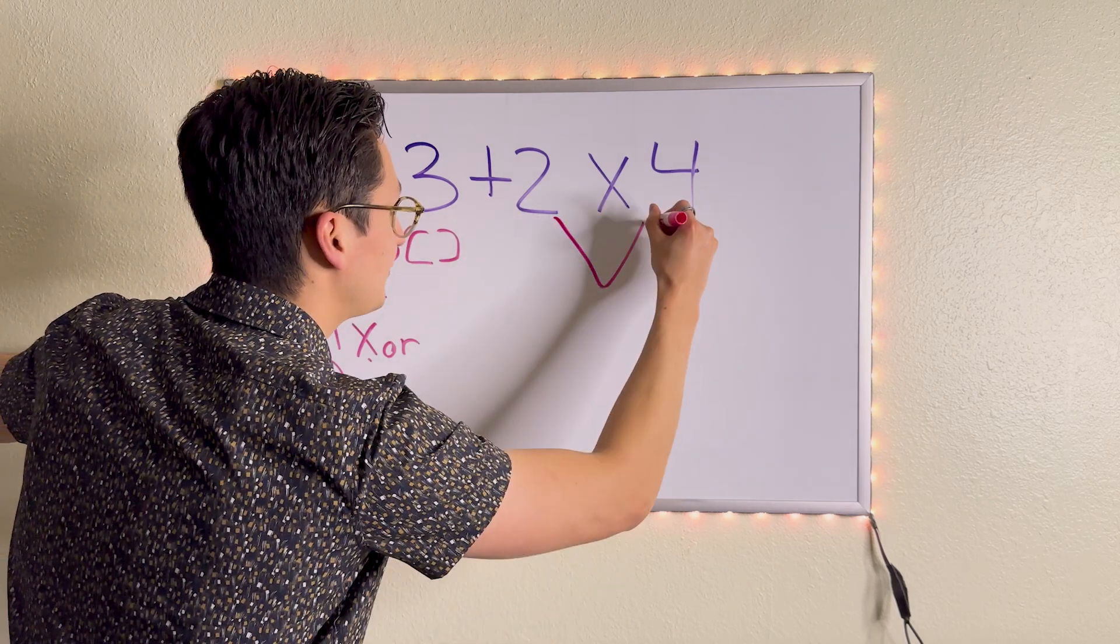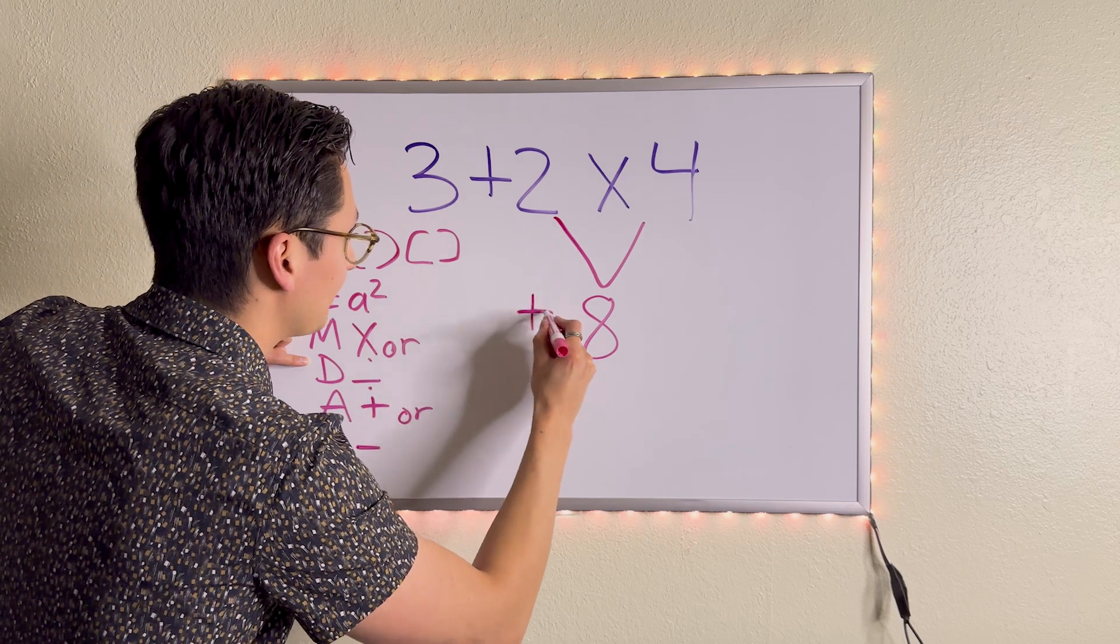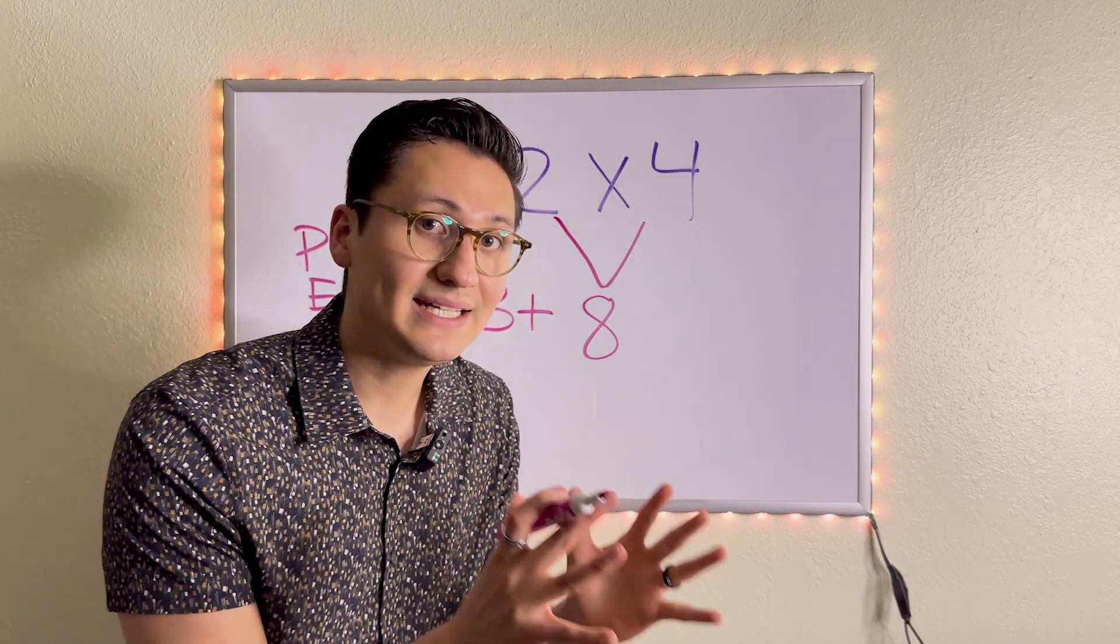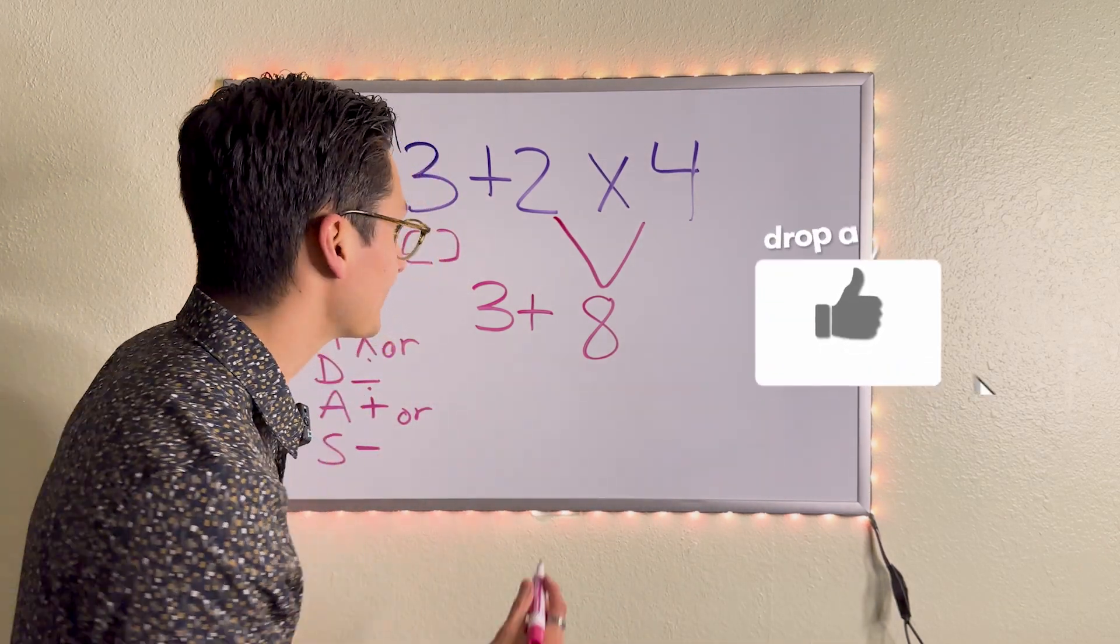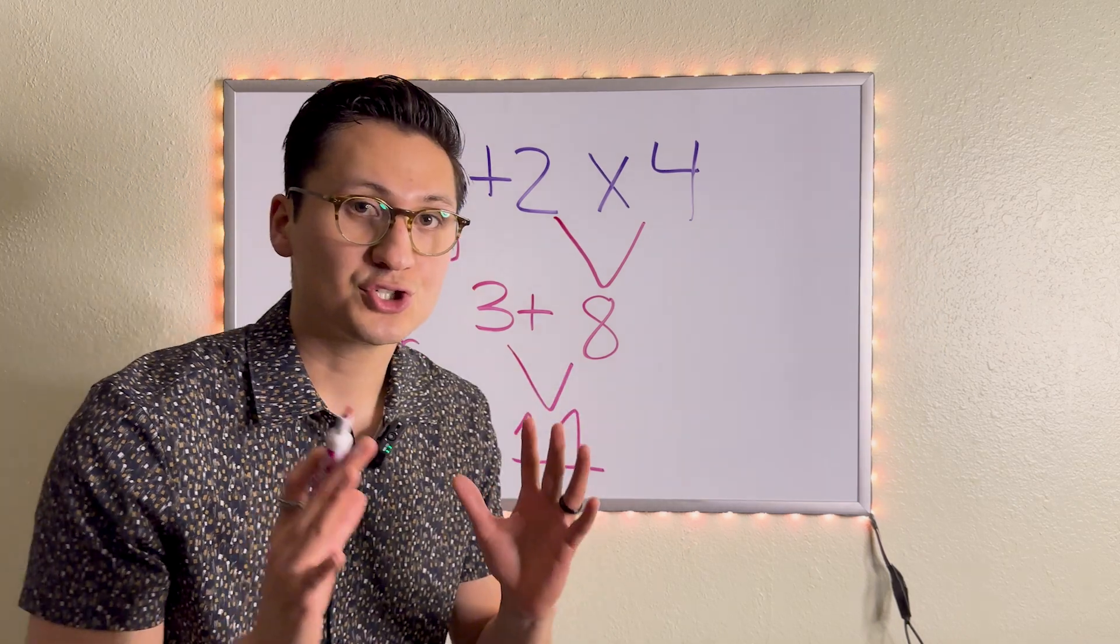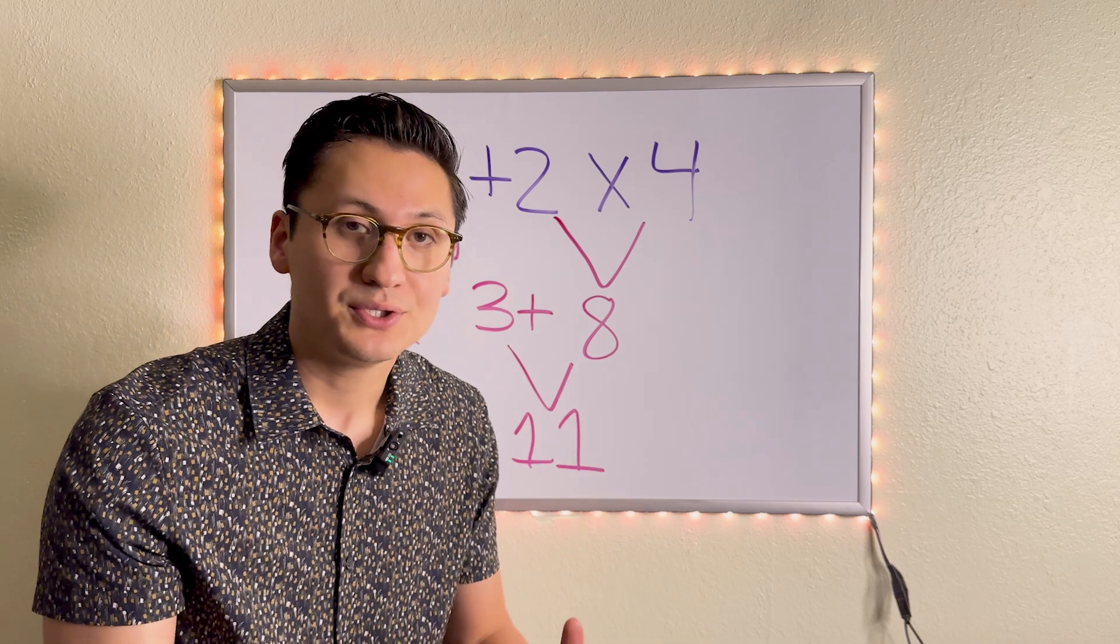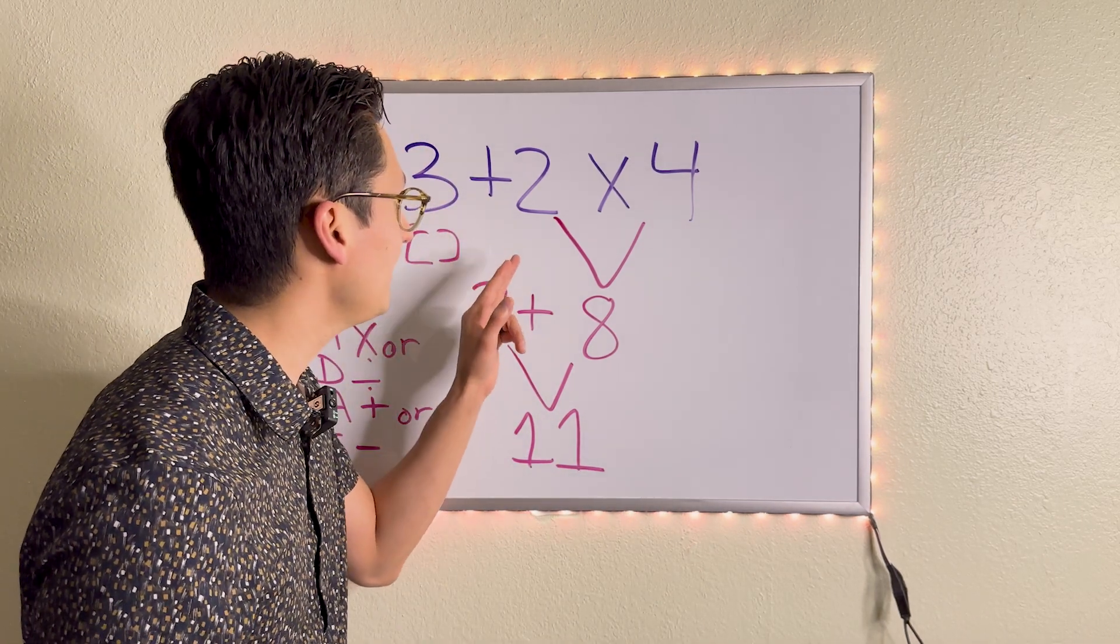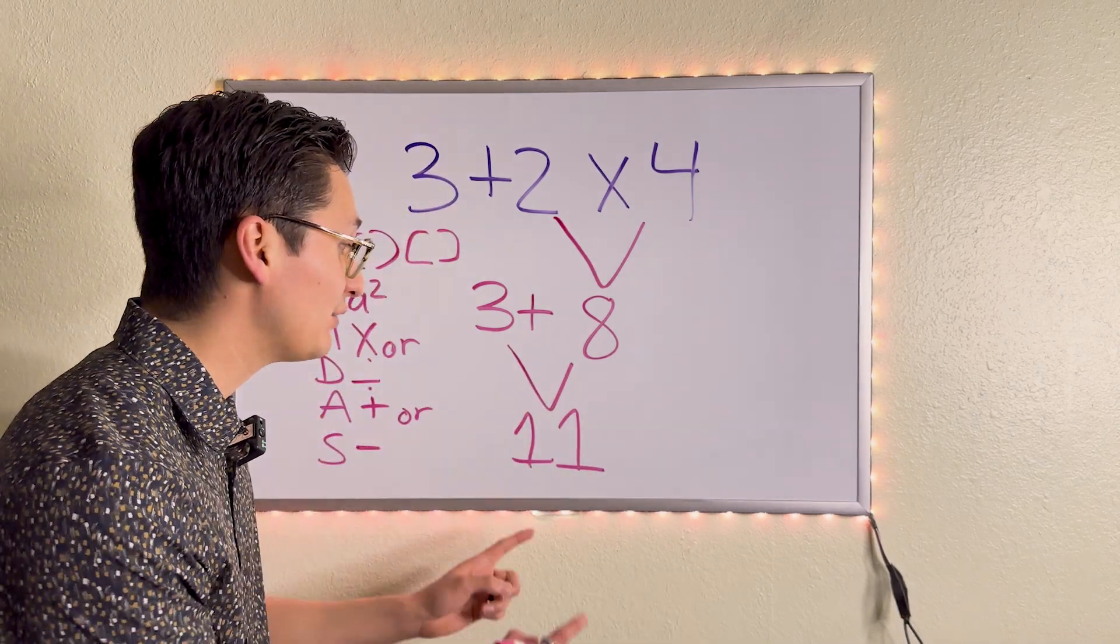So two times four is eight. We bring the plus sign down and we bring the three down. Now, the only thing left to do is to add because that's the only symbol that is left. So three plus eight is 11. Super important for you to follow the order because if you don't, you might be thinking, well, let me just add first. Three plus two is five times four is 20. 20 is way different than 11.